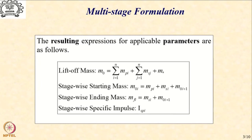The lift-off mass M0 is the sum of propulsion mass for all the stages, the structural mass for all the stages, and the payload stage mass. We now introduce an important definition: the stage-wise starting mass as the mass of that particular stage given by MPi plus MSi, plus the mass of everything above it given by M0(i+1). Similarly, the stage-wise ending mass MFi would be M0i minus MPi. And we have the stage-wise specific impulse ISPi.